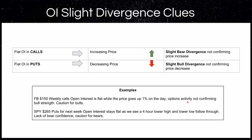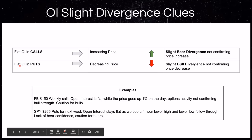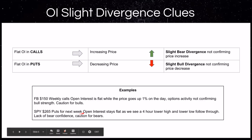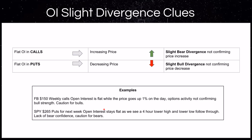If we have flat open interest in puts and the price is going down, that's a slight bull divergence because it's not confirming the price decrease and showing that bears are confident in continuation — we're not seeing puts being bought. For the same example, SPY $265 puts for next week: open interest stays flat and we see the four-hour lower high and lower low follow-through. There's a lack of bear confidence, and we have to be cautious because the options activity is not going hand in hand with what we're seeing on the price of the underlying stock.